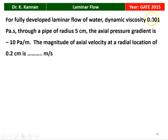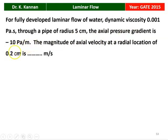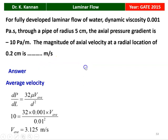Next question from the GATE 2015 question paper. For fully developed laminar flow of water, the dynamic viscosity is 0.001 Pascal second, through a pipe of radius 5 centimeter. The axial pressure gradient is minus 10 Pascal per meter. The magnitude of axial velocity at a radial location of 0.2 centimeter is __ meters per second.